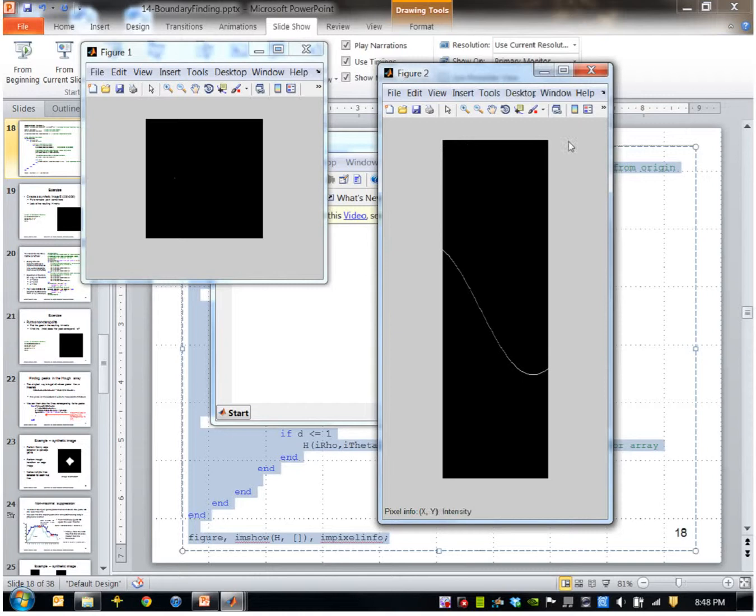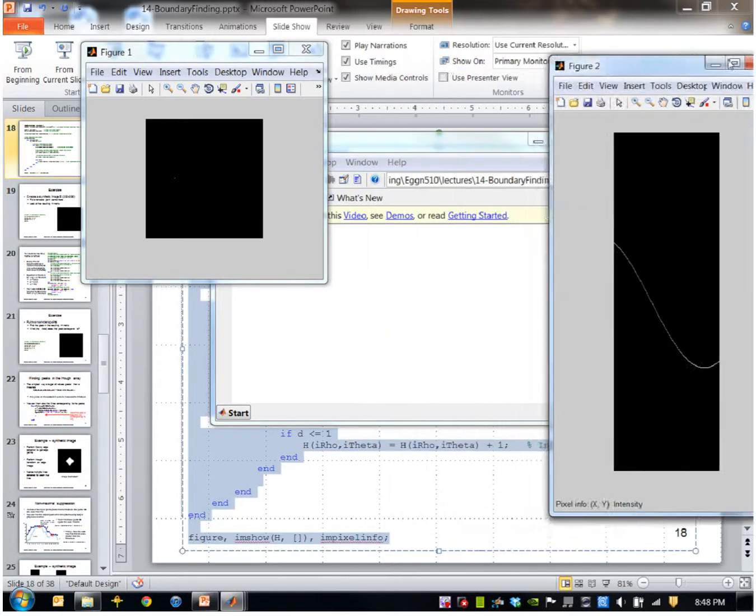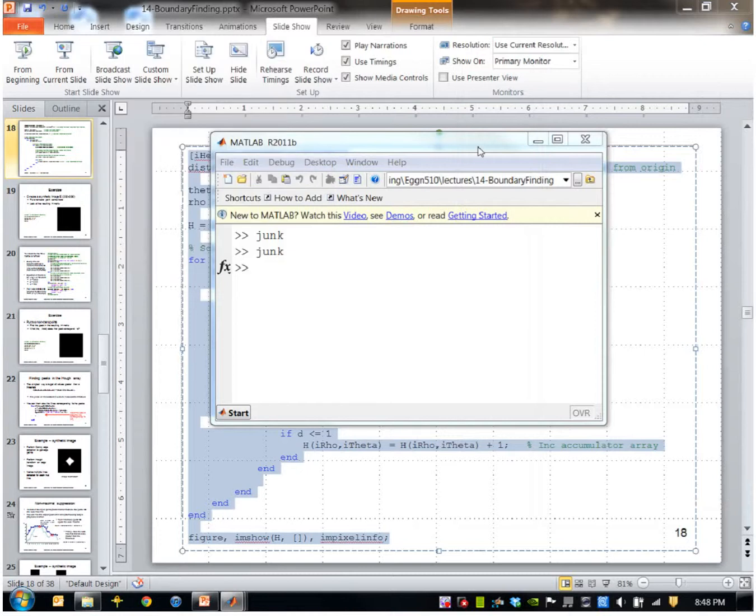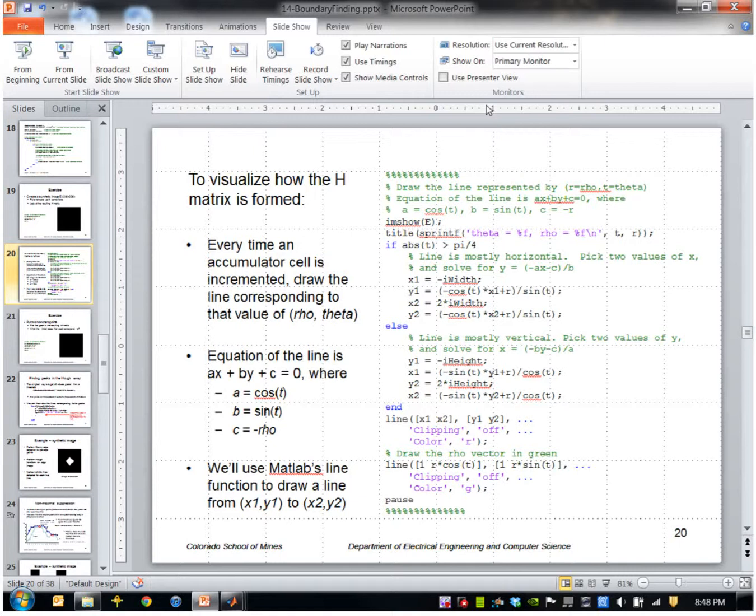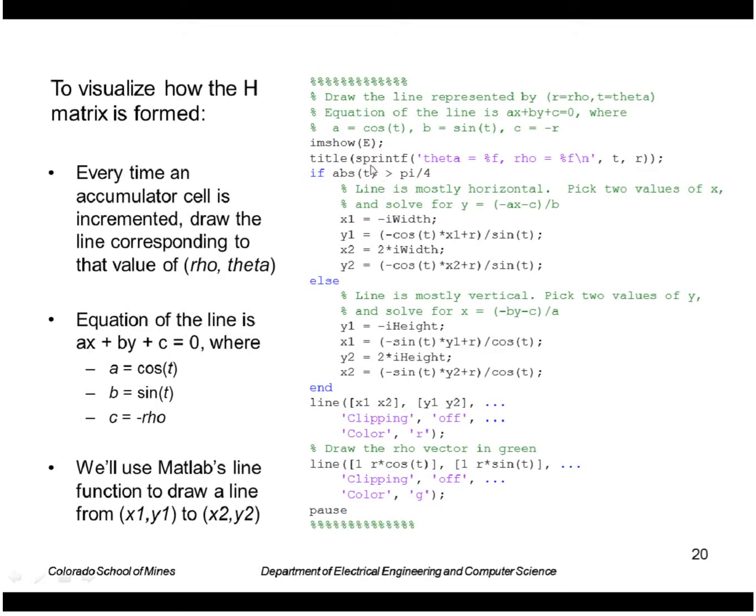And this represents values of theta across the top from minus 90 to plus 89 and values of rho vertically here from minus d max to plus d max. So this is helpful to see how the matrix is formed. What we're going to do is draw the lines that are being voted for. So every time we get a line, a rho theta, we'll draw that on the original image.